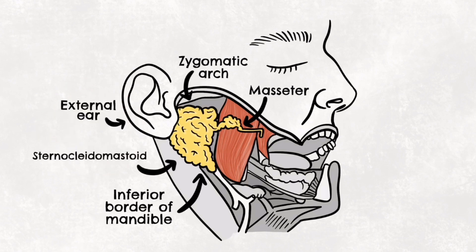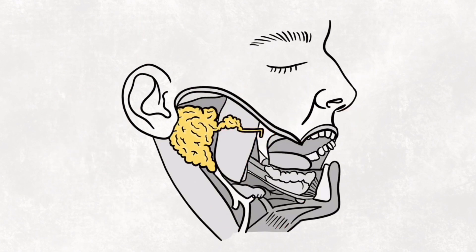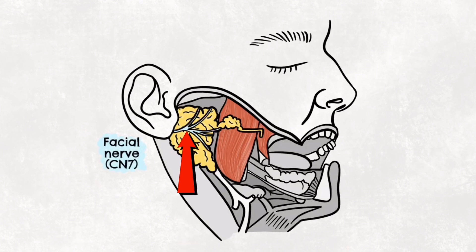Several nerves and vessels pass through the gland, which are relevant operatively. The facial nerve, cranial nerve 7, gives rise to five terminal branches within the parotid gland. These branches innervate the muscles of facial expression. If you want to find out more about the facial nerve, check out our Sotin Brain Hub video on the subject.